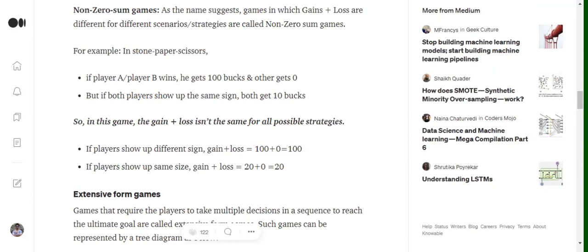So, if the players show up with different signs, that is one player wins, the gain equals 200 but there's no loss going on. Hence gains plus losses equals 200.